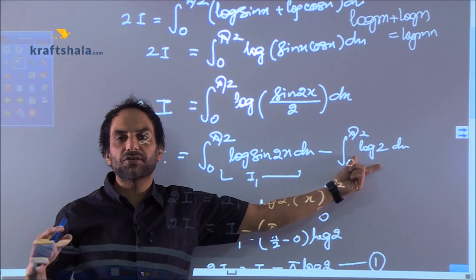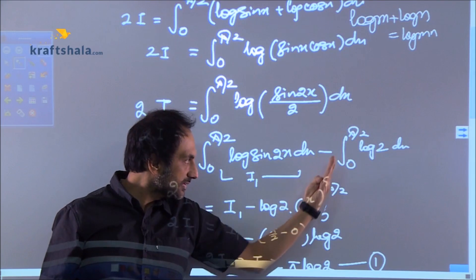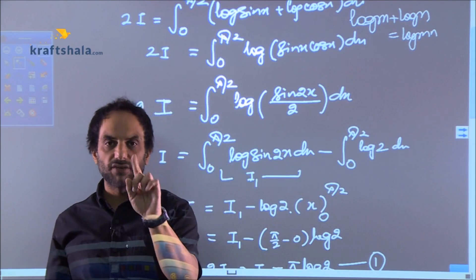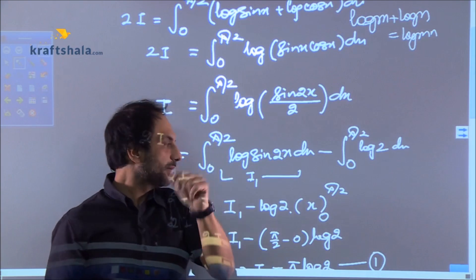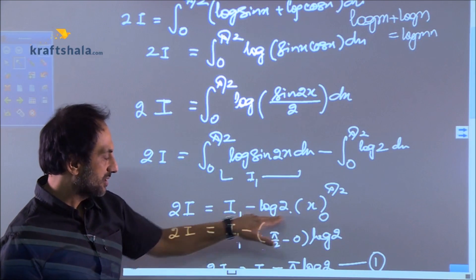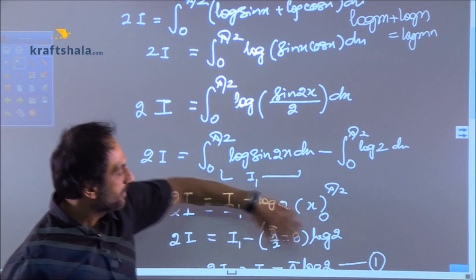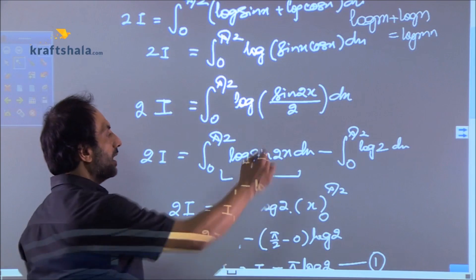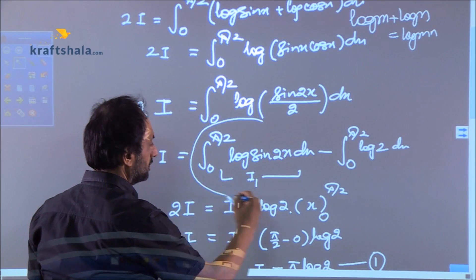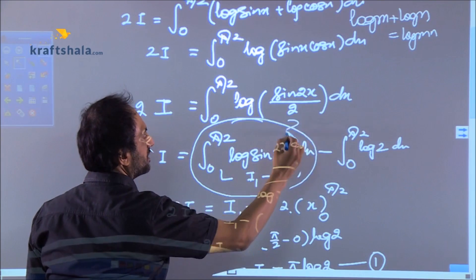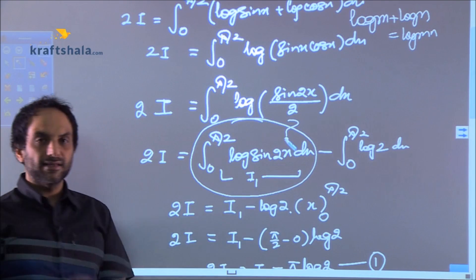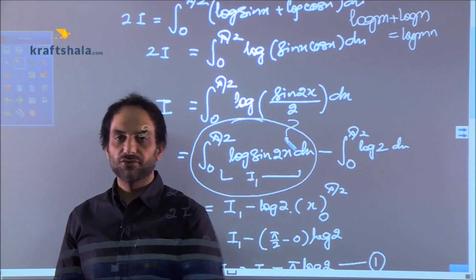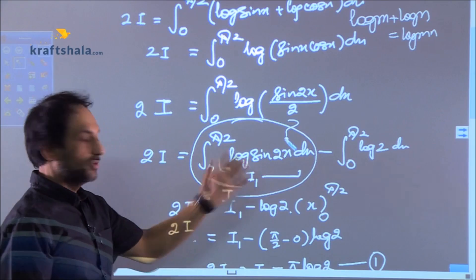This part can easily be solved because you can take log 2 outside and the integration of 1 will be x and you put upper limit and lower limit. Just see what we have done. So this part is nothing but π/2 log 2 with minus sign. What will happen to this part? This is a big question now. And that's why they say it is a little confusing question. So do not worry.